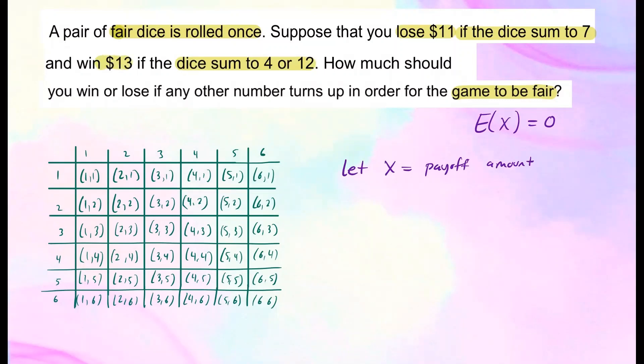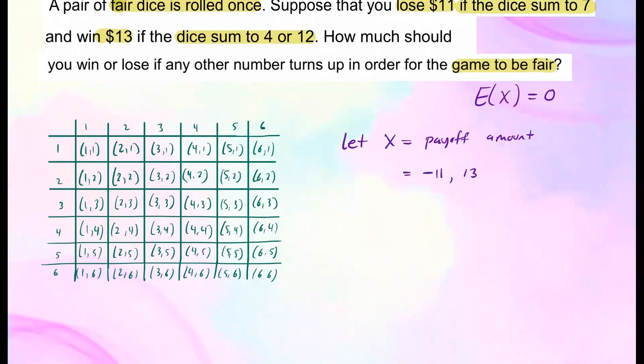So the possible values x can take would be negative 11 because you lose $11 or 13, you win $13. So we want to make this game fair. So what happens if some other number turns up? Let's create a table.